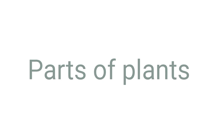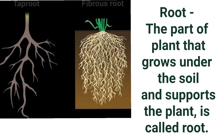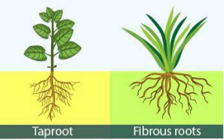In this lesson, we study the parts of plants. First, we see the root. The part of the plant that grows under the soil and supports the plant is called the root. There are two main types of root: tap root and fibrous root.